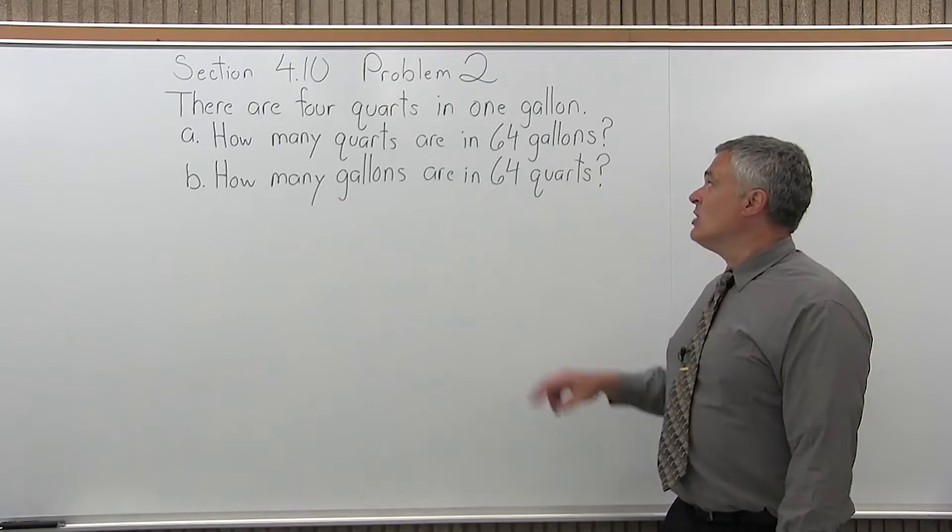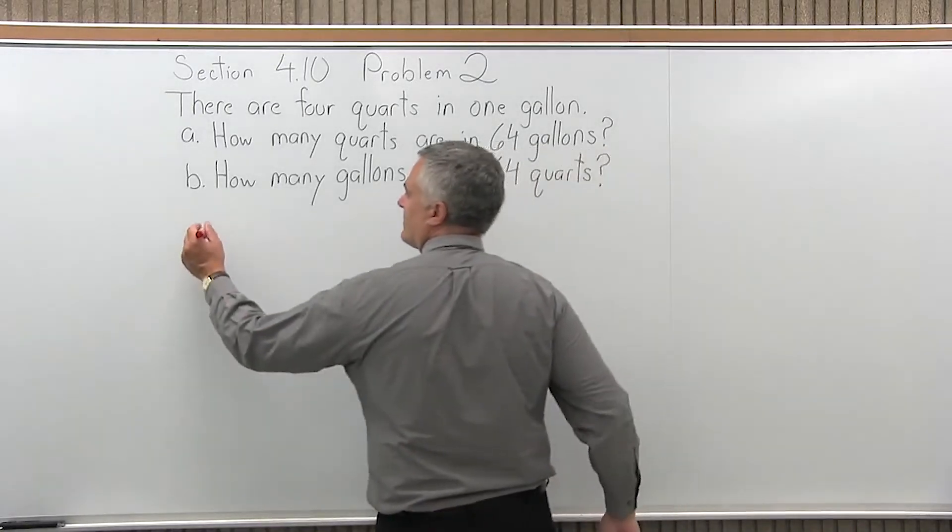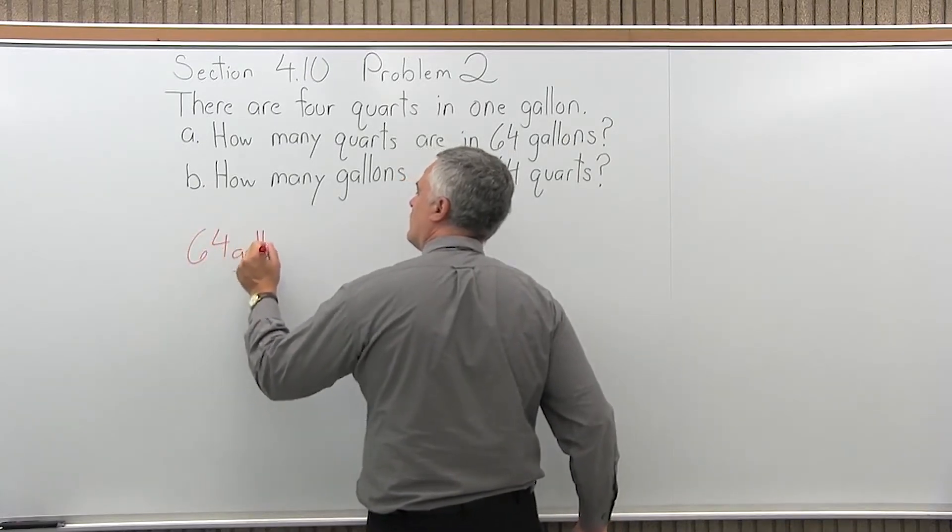So to start with A, you want to start with the given amount. So we're given 64 gallons. Make sure you include the units of measure, so 64 gallons.